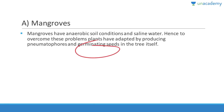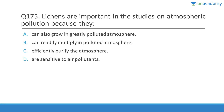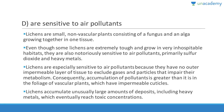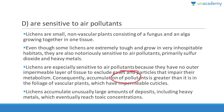Lichens are important in studies on atmospheric pollution because they are very sensitive to pollutants. Lichens are made up of algae and fungus growing together in one tissue. Even though some lichens are extremely tough, they are very sensitive to air pollutants, especially sulfur dioxide and heavy metals. They have no outer impermeable tissue to exclude gases and particles, so pollutants impair their metabolism.